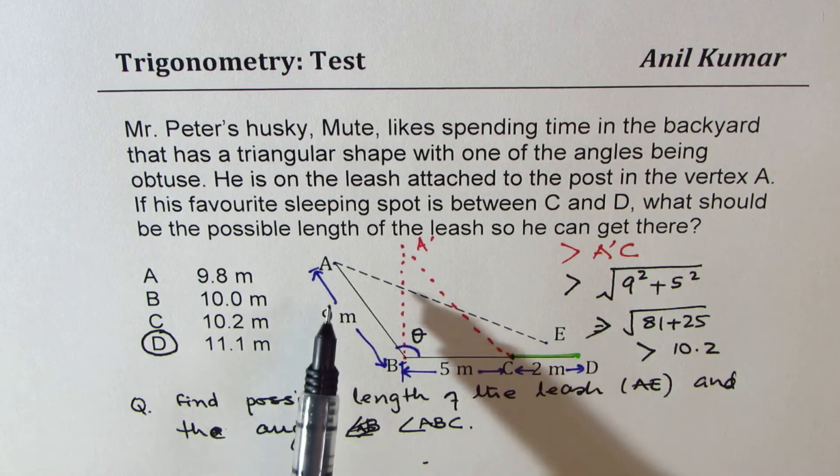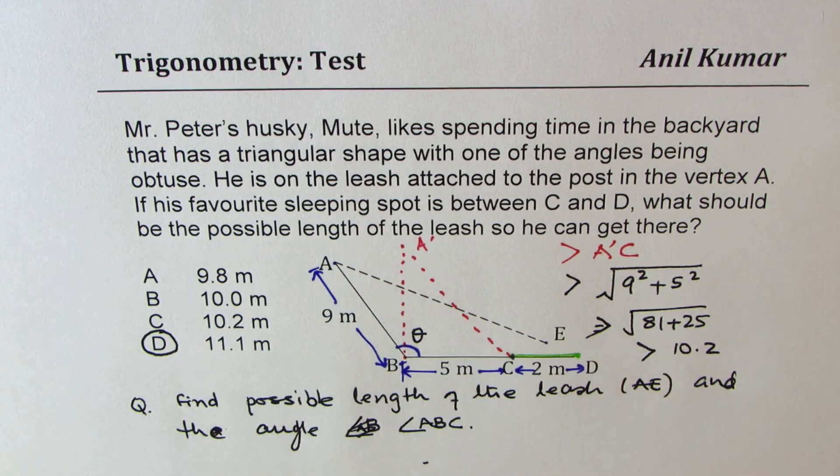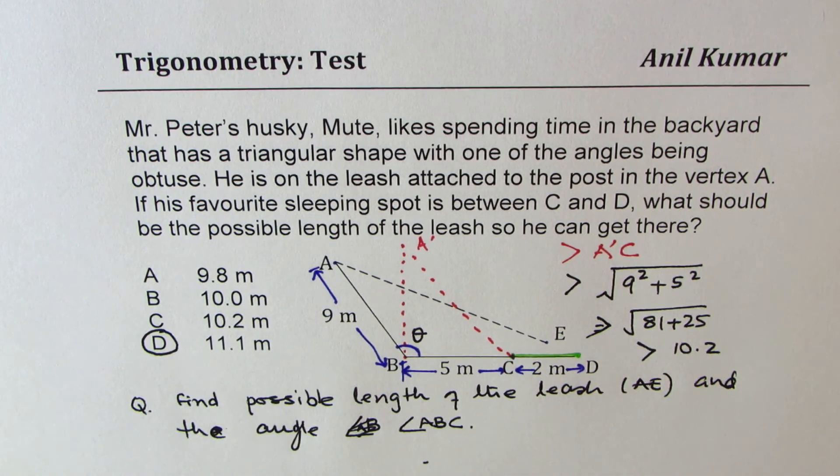So find what could be possible length AE and for that length, what is the obtuse angle theta. So I hope that helps. Feel free to write your comments and share your views. And if you like and subscribe to my videos, that'd be great. Thanks for watching and all the best.